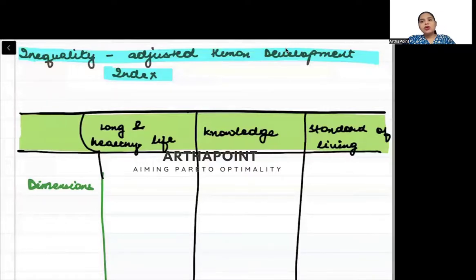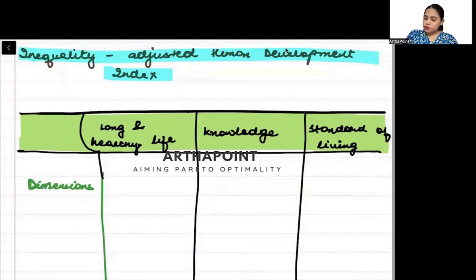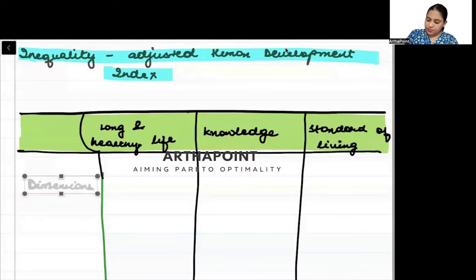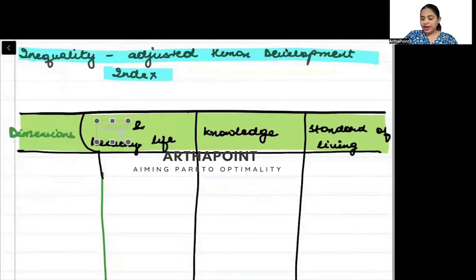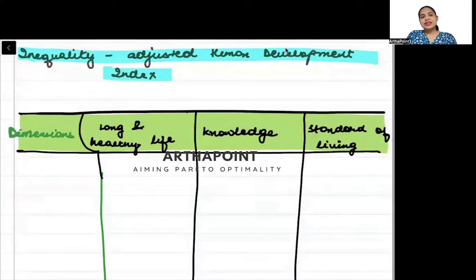Let us learn today about the Inequality Human Development Index. The Inequality Human Development Index is very similar to the actual Human Development Index. The dimensions of IHDI are also the same — there are three dimensions: long and healthy life, knowledge, and standard of living — exactly the same as the Human Development Index.